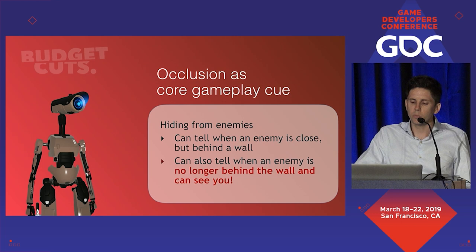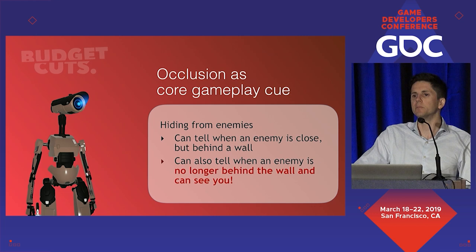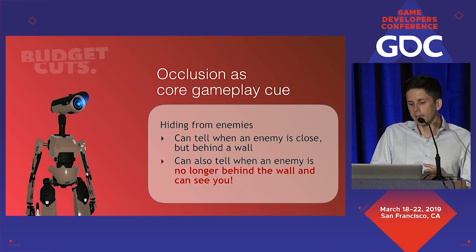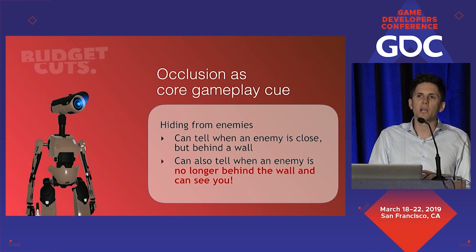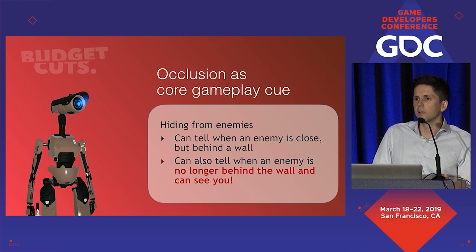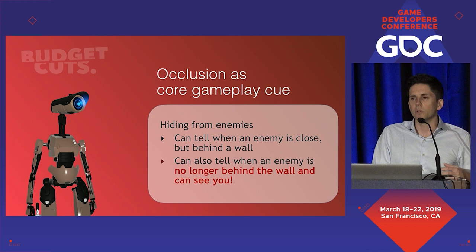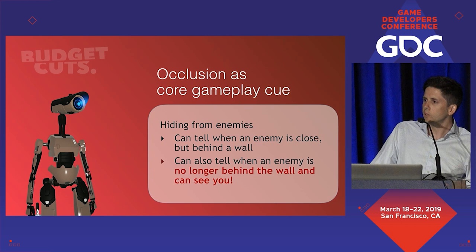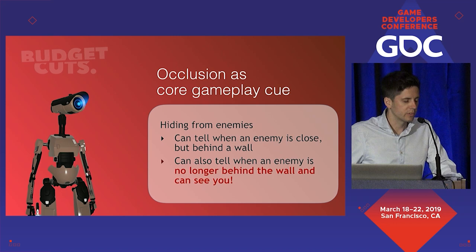Another core gameplay cue is occlusion — the way a sound is being blocked. Essentially it's a ray trace from the audio source back to the listener. If there is geometry intersecting that path, the sound gets muffled according to what material that geometry has applied to itself. This tells us if we're behind safe cover or in a direct line of sight to an enemy. There are also telephones — similar to the Matrix, where you pick up the phone to get mission information — and you can hear clearly if the phone is in a different room, and even pinpoint which room it's coming from.